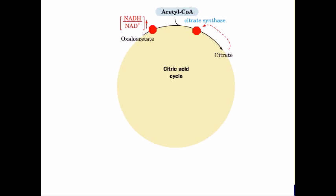Isocitrate dehydrogenase catalyzes the conversion of isocitrate. It is activated by calcium ions and ADP and is inhibited by increased ratios of NADH to NAD+.